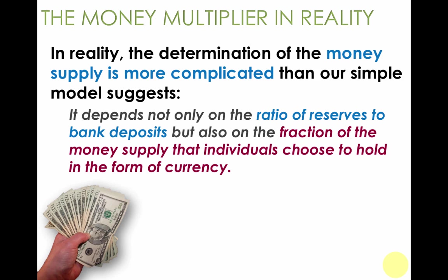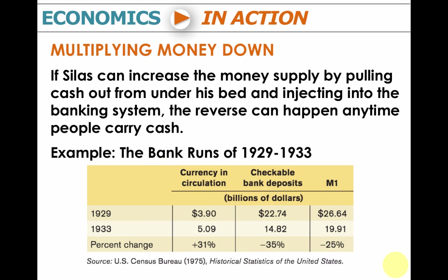Furthermore, some banks — especially during recessions — may choose not to loan out the full amount that they can. So they're not fully loaned up; they're being extra cautious and holding back deposits. And a reminder that the money supply can decrease with the money multiplier, just like it can increase.